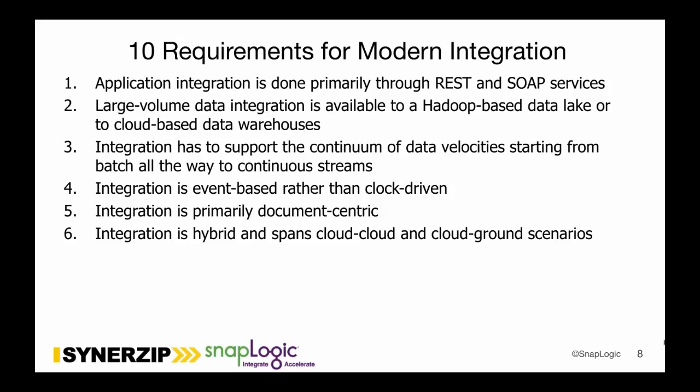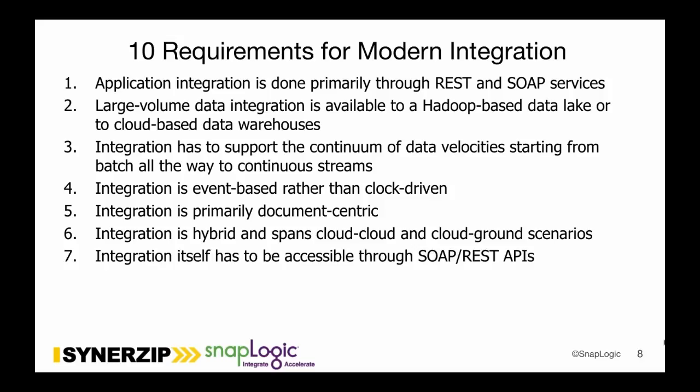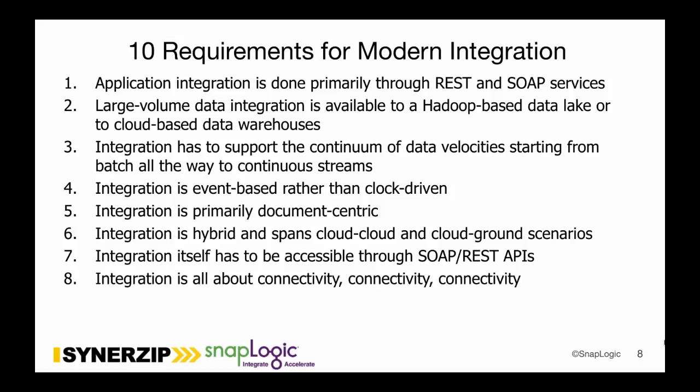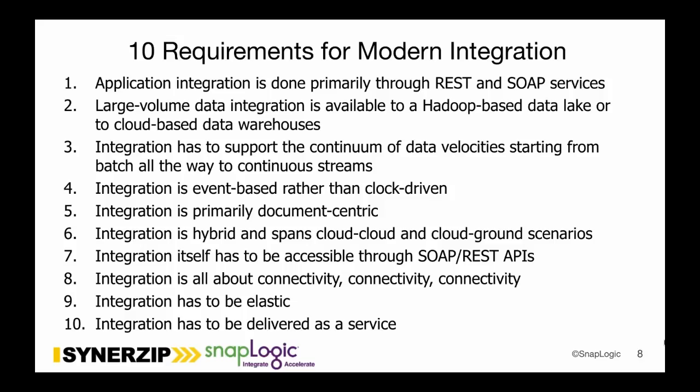Integration has to span cloud-to-cloud and cloud-to-ground scenarios. Your integration should respect data's gravity and run as close to the data and applications as needed. If you're running Salesforce to Workday to ServiceNow, you'll want to run integrations in the cloud. If you're doing SAP and Oracle with one cloud application, you probably want your integration running on-premises. It has to be accessible through SOAP and REST services — there's a lot of talk about microservices and API-centric integration. Connectivity is critical — at SnapLogic we call these connectors 'snaps.' Elasticity is important so you can scale up and out as needed, delivered as a service.